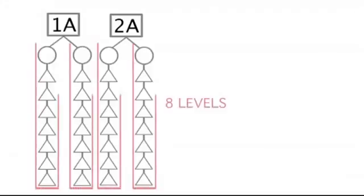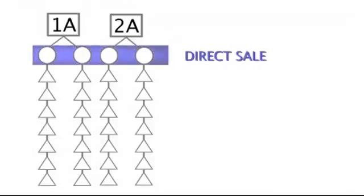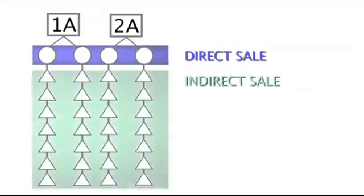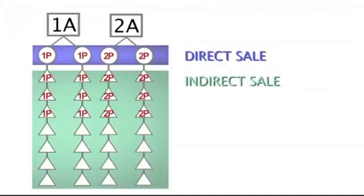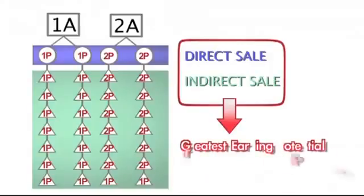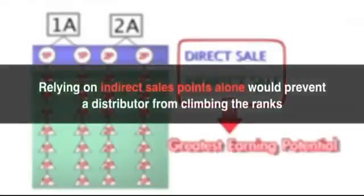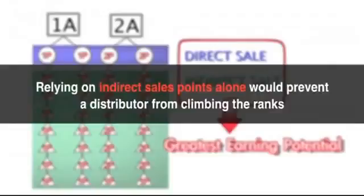Under each distributor are eight levels descending from top to bottom. The very first step under the distributor is limited to direct sales only. Everything below that line is indirect sales. Keep in mind that you accumulate commission points from indirect sales as well, which is necessary as indirect sales points play heavily into the formula to achieve the greatest earning potential. It should be noted that relying on indirect sales points alone would prevent a distributor from climbing the ranks.